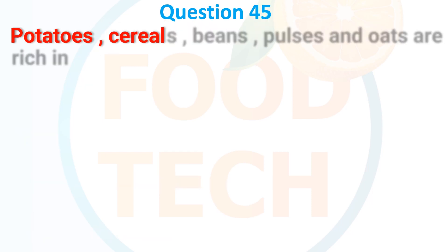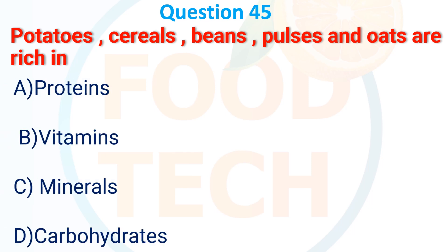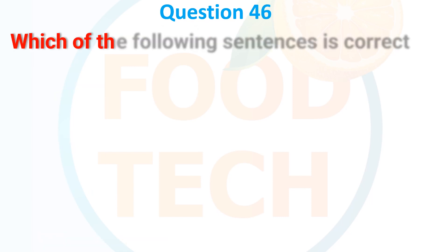Question 44: Potatoes, cereal, beans, pulses, and oats are rich in — A. Protein, B. Vitamins, C. Minerals, D. Carbohydrate. The answer is D. Carbohydrate.